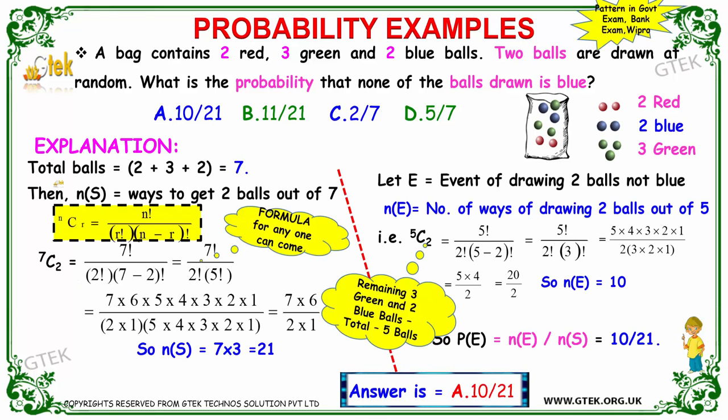The total number of balls is 2, 3, and 2, that's seven balls. This is the formula: if there is a possibility that anyone can come, this is the formula. So 7C2, nCr equals n factorial divided by r factorial times n minus r factorial. I got seven balls and two balls I want: 7 factorial divided by 2 factorial times 7 minus 2, so 5 factorial.